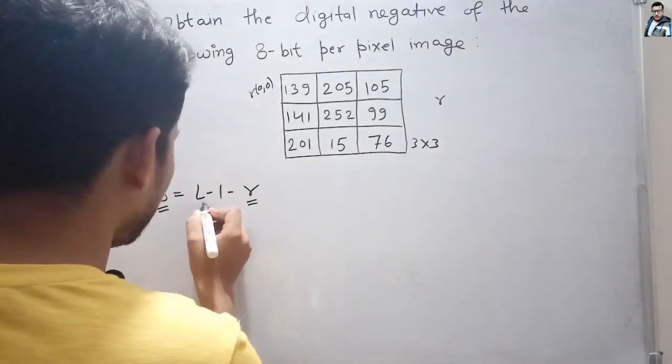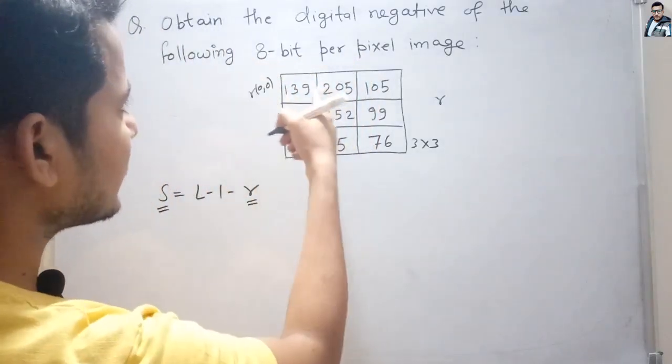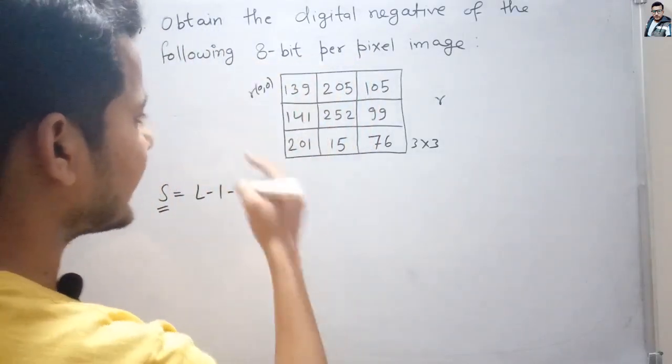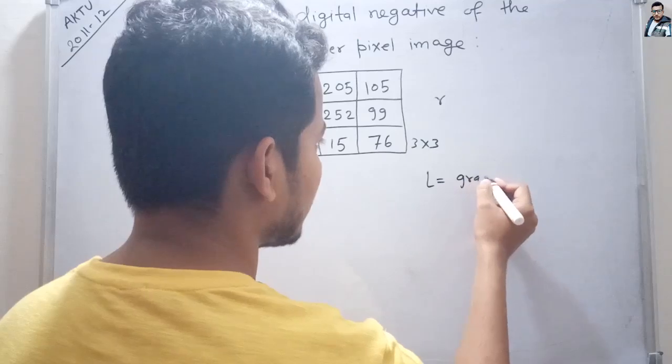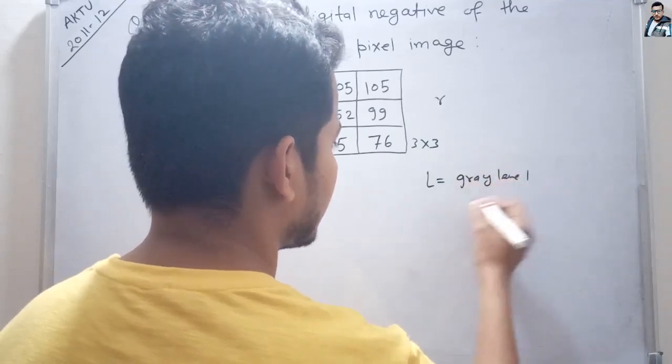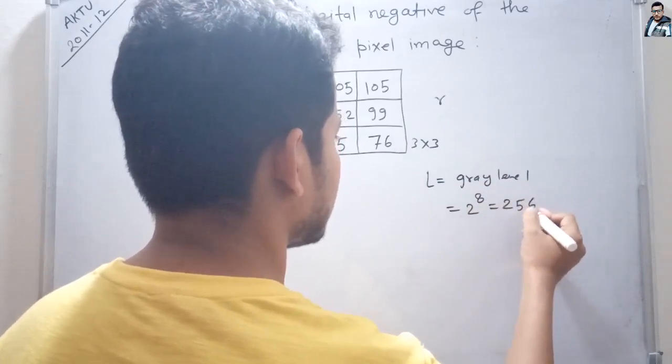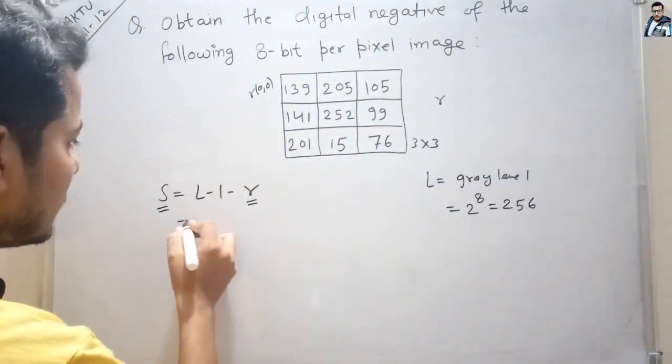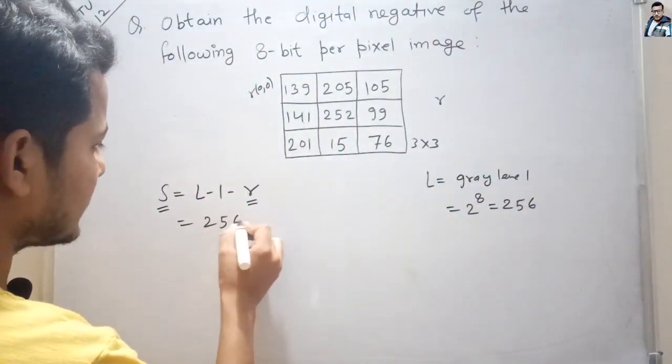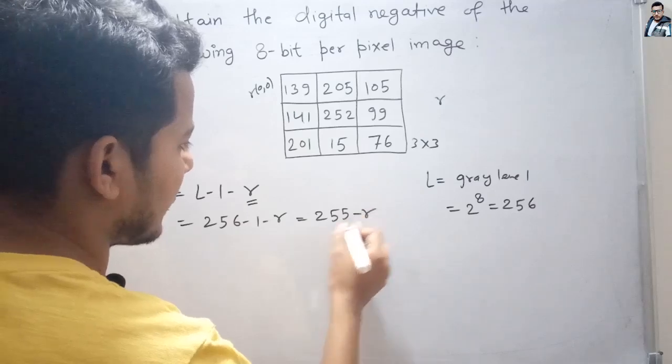Here, L is the gray level value. Since we have an 8-bit per pixel image, L equals 2 to the power 8, which is 256. Therefore, our formula becomes 256 - 1 - r, which simplifies to 255 - r.